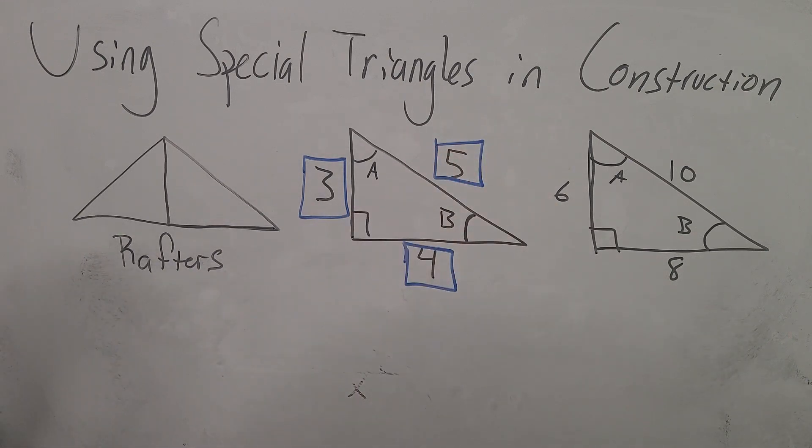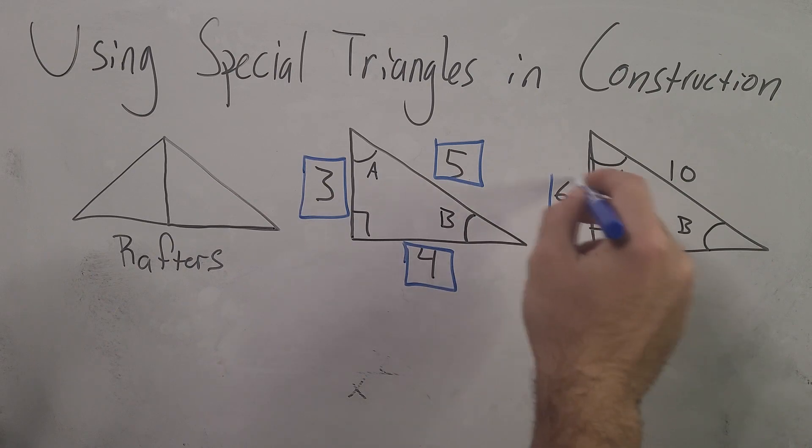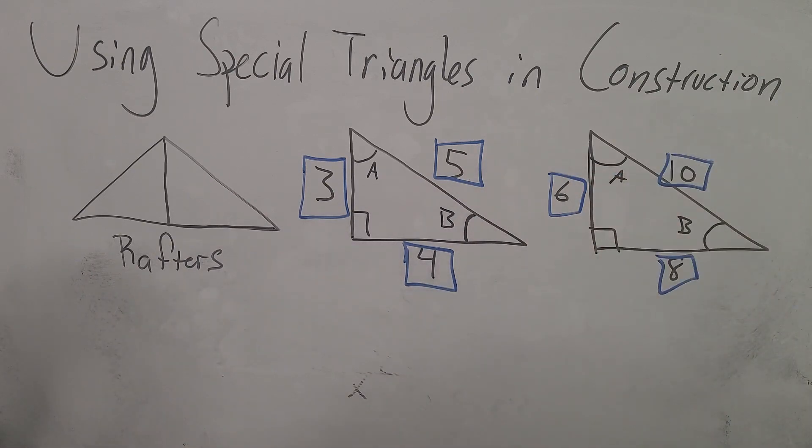Now before I move on to the angles I want to talk about these sides. The 3-4-5 triangle is known for having these perfectly proportional sides with whole numbers, completely whole numbers. And what's very special about this and helpful with construction is we can scale these numbers to larger or smaller numbers. For example we could translate this 3-4-5 triangle into a 6-8-10 triangle, and we could continue: we can make it a 9-12-15 triangle or an 18-24-30 triangle.